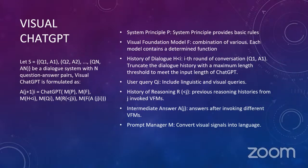Here we present the formal description or formulation of Visual ChatGPT. Let S be a dialogue system with n question and answer pairs, formulated as shown here. Let A sub i be the final output from the model. ChatGPT will interact with the prompt manager, which takes some inputs: the system principle, the visual foundation models, the history of the dialogue, the user query, the history of reasoning, the intermediate answers, and the prompt manager, which handles each one of these foundations.